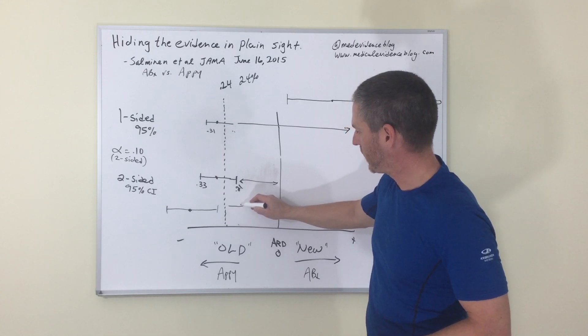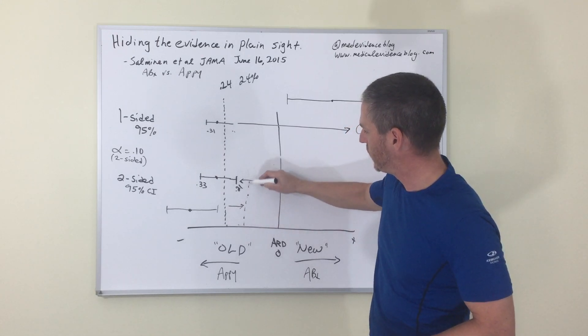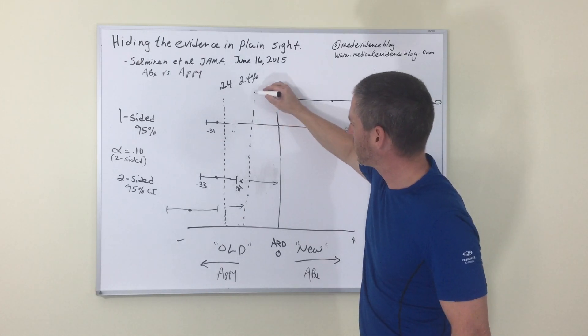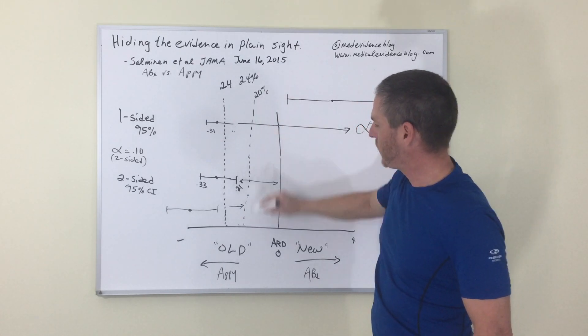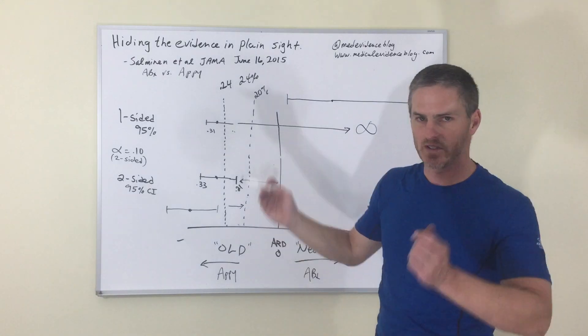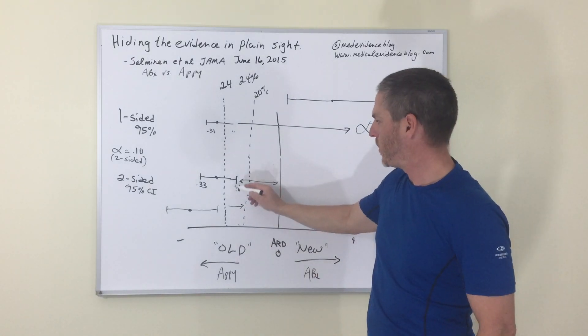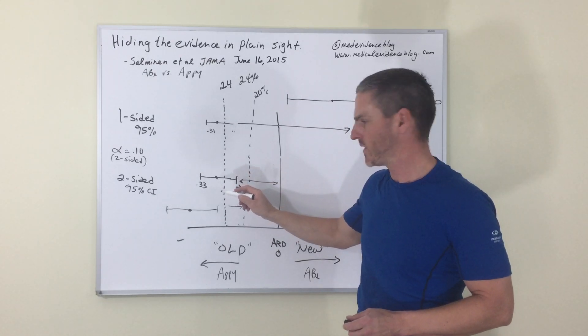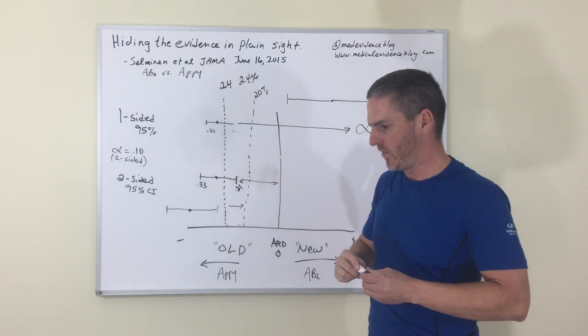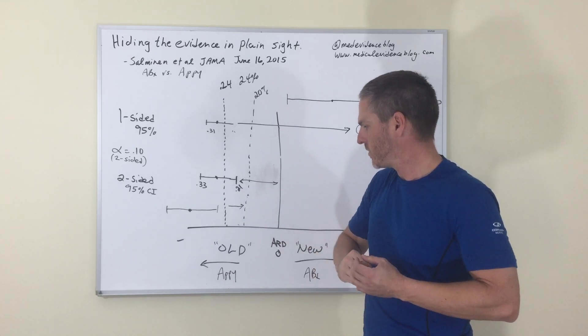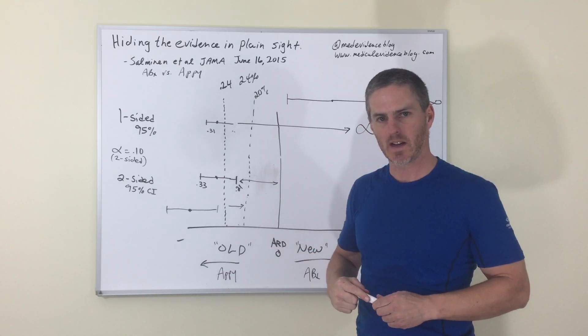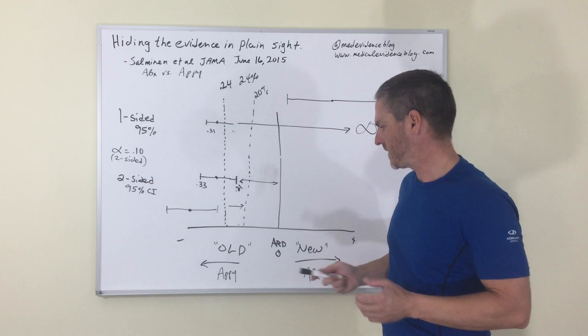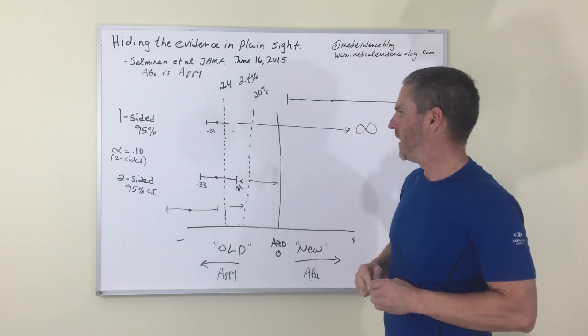Notice, of course, as we said in the first talk also, all I have to do is move this, instead of 24, I said 25 is a good round number. Well, 20 is a good round number too. If we had made delta 20 and enrolled the same 530 patients, we would have had the entire 95% confidence interval, two-sided lie all the way to the left of the delta, thus totally favoring the old therapy appendectomy and declaring antibiotics inferior or appendectomy superior.